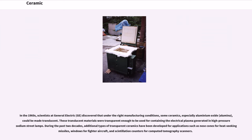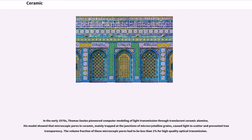During the past two decades, additional types of transparent ceramics have been developed for applications such as nose cones for heat-seeking missiles, windows for fighter aircraft, and scintillation counters for computed tomography scanners. In the early 1970s, Thomas Sowell pioneered computer modeling of light transmission through translucent ceramic alumina. His model showed that microscopic pores in ceramic, mainly trapped at the junctions of microcrystalline grains, caused light to scatter and prevented true transparency. The volume fraction of these microscopic pores had to be less than 1% for high-quality optical transmission.